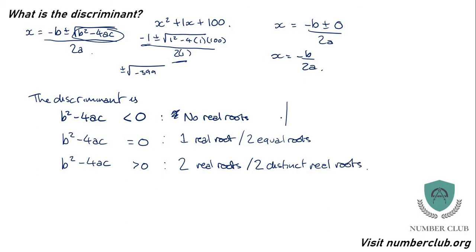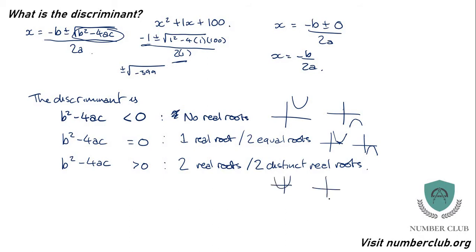A u-shaped quadratic could have no real roots by sitting entirely above the x-axis, or an n-shaped one could sit entirely below. For one real root, you get a curve just tapping and touching the x-axis and turning away. For two real roots, the curve crosses the x-axis in two places. The trick with the discriminant is that you'll very often need to graph it, so you need to be able to graph quadratics well. If you can't, look back at the previous videos.